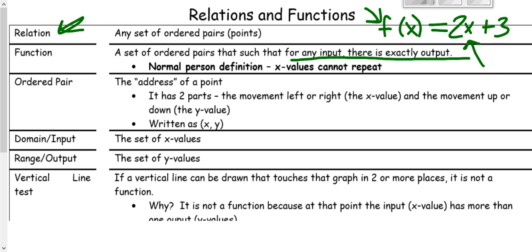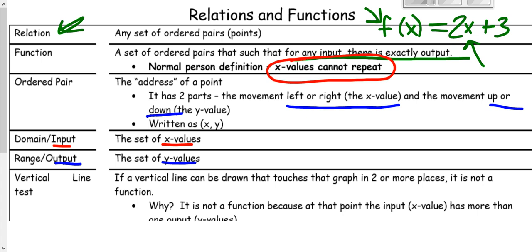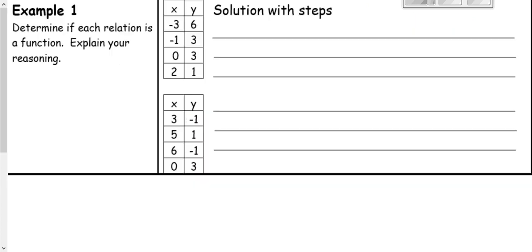In the normal person definition — not so mathy and technical — you're going to make sure that your x values don't repeat with different y values, because x values are your input and y values are your output. An ordered pair has two parts: your left or right movement, which is your x value, and your up or down movement, which is your y value. The input always goes first when writing an ordered pair.